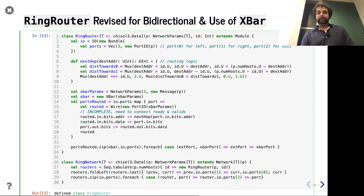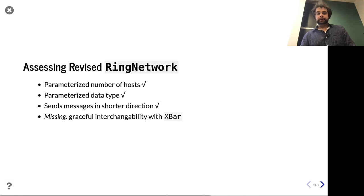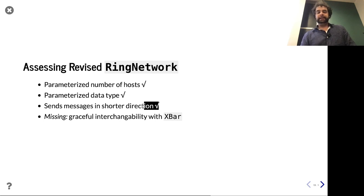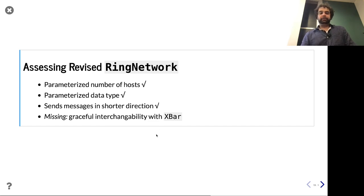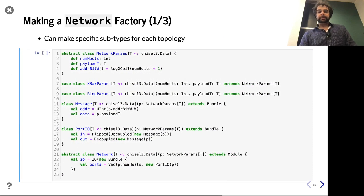So that's pretty neat. Now we have a bidirectional ring network — we send messages in the shorter direction. We still don't have very graceful interchange across networks where you have to change a lot of types to switch one for the other. To solve that, we can go ahead and make a factory class.